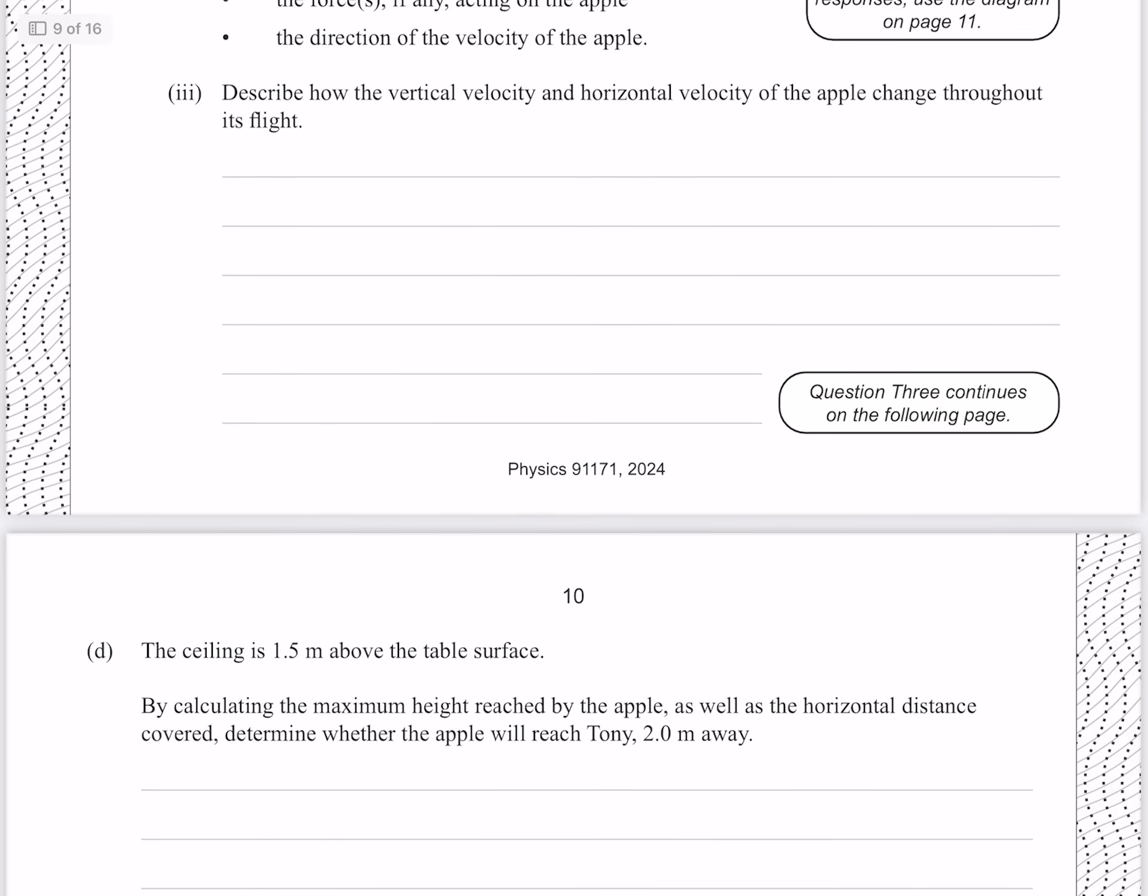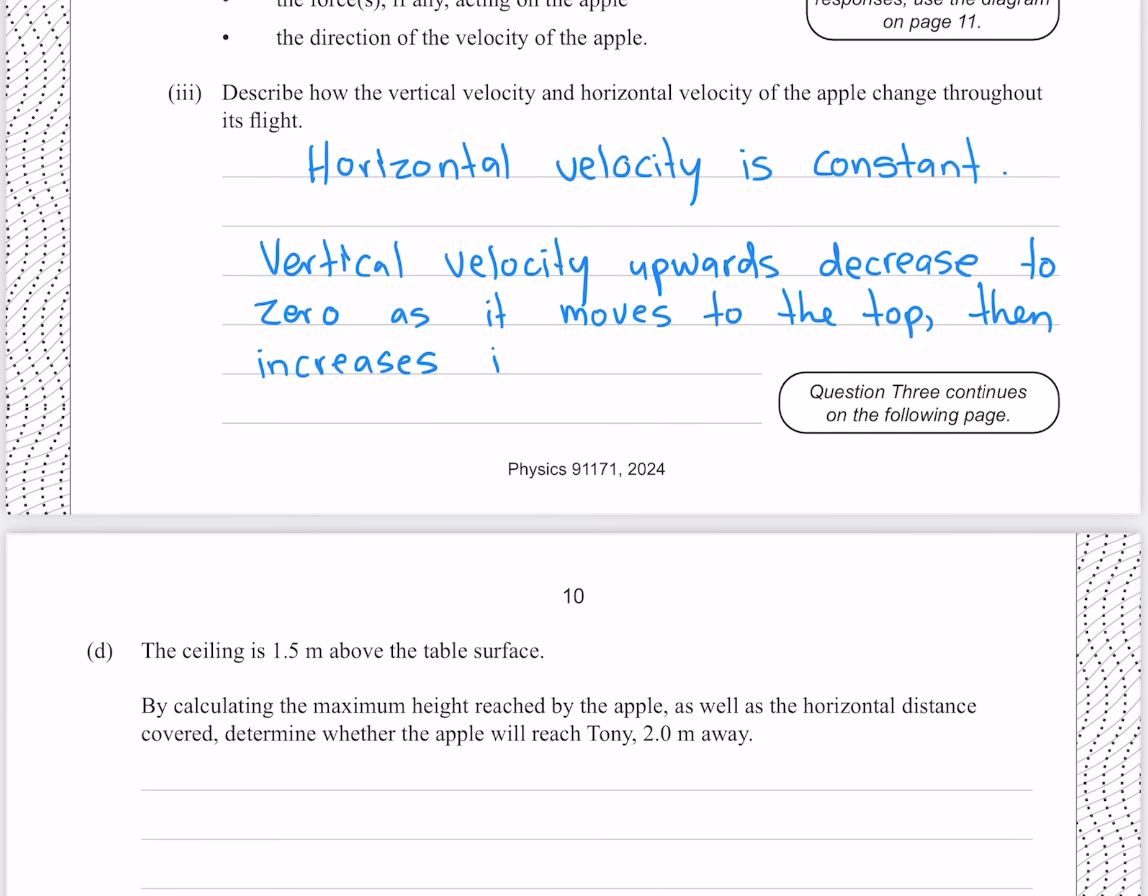Describe how the vertical velocity and horizontal velocity of the apple change throughout its flight. The horizontal velocity is constant, however the vertical velocity upwards decreases to zero as it moves to the top, then increases in the downwards direction. This is due to the constant downwards acceleration due to gravity.